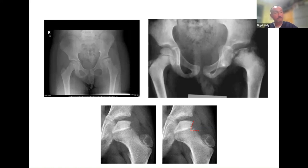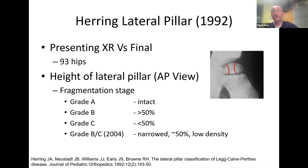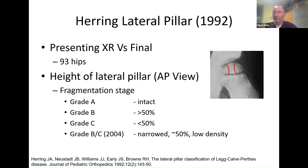When we see a child in clinic we might want to classify the Perthes and get an idea of what the future might hold. One of the more commonly used systems is the Herring lateral pillar classification from 1992. We look at an x-ray and divide the hip into three parts, measuring how high the outer portion is compared to the normal side. We give a classification of A, B, or C: A is intact, B is over 50% of the height preserved, C is less than 50%. There is also a B/C borderline grade. The idea is that if the lateral column is intact it protects the hip from collapsing because it's less involved in taking the load.